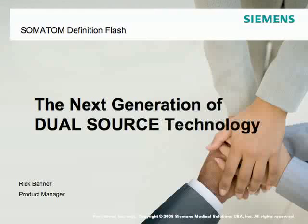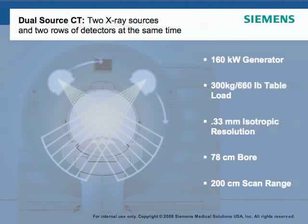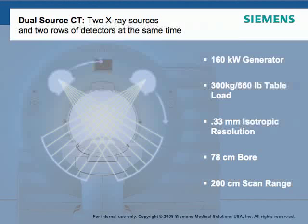The dual source CT was introduced back in 2005. The benefit was two x-ray sources and two rows of detectors acquiring data simultaneously. This allowed use of two kilowatt generators at 80 kW each combined into one, a 78-centimeter bore, 660-pound table for large patients, isotropic resolution down to 0.33 millimeters on all sides, and a 200-centimeter scan range.